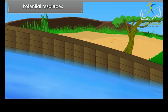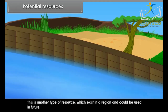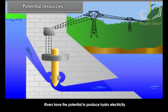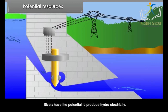Potential resources are another type of resource which exist in a region and could be used in the future. For example, rivers have the potential to produce hydroelectricity.